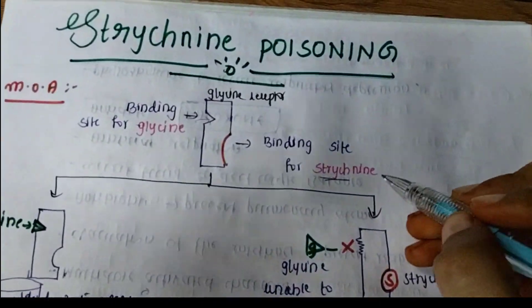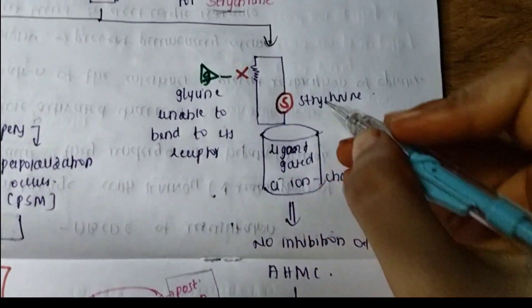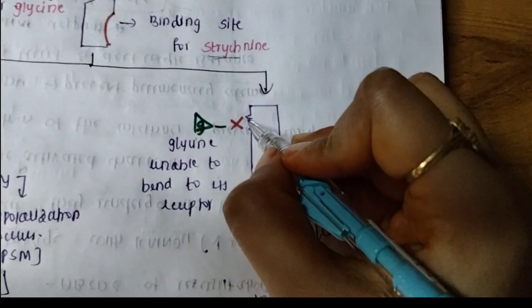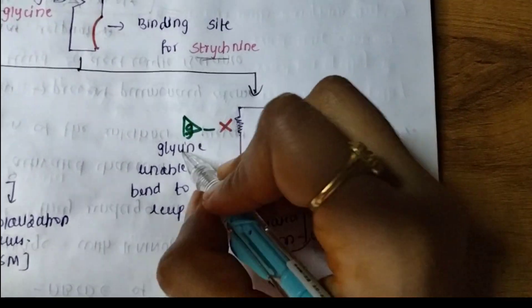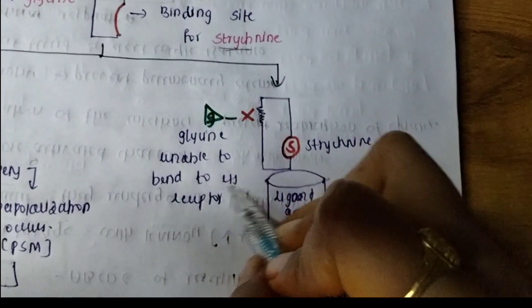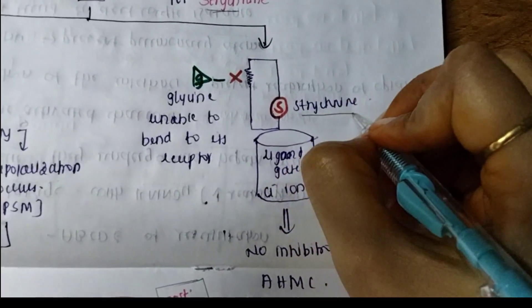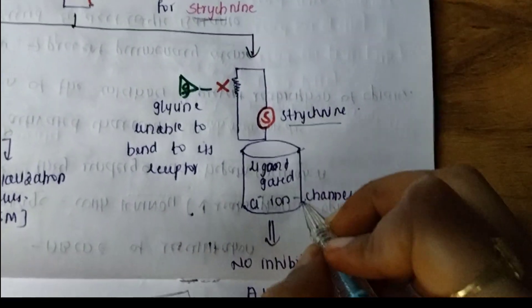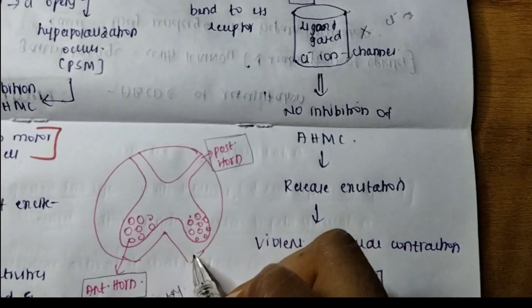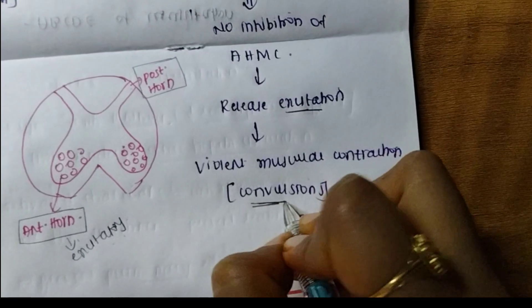Now we will see how this receptor acts when strychnine binds to its site. Strychnine binds to this area, altering the receptor so that glycine cannot bind. Glycine is unable to bind to this receptor. Because strychnine is bound, this ligand-gated chloride channel is not activated — chloride ions do not flow out, hyperpolarization does not occur, and there is no inhibition of the AHMC. Since the AHMC is excitatory, excitation occurs, causing violent muscular contractions which result in convulsions. This is the overall flowchart of strychnine's effects.